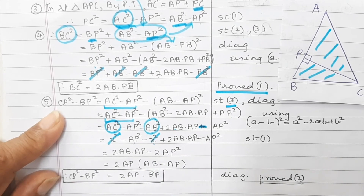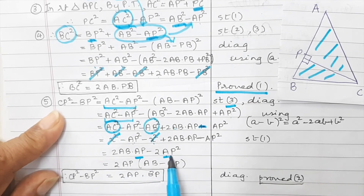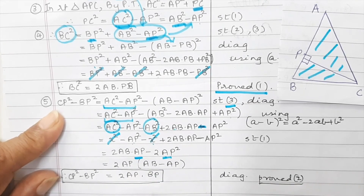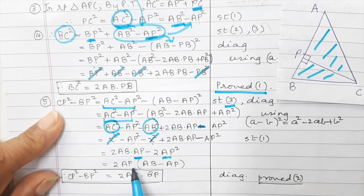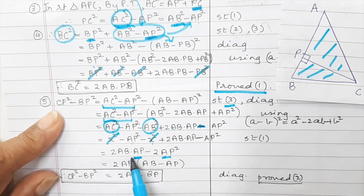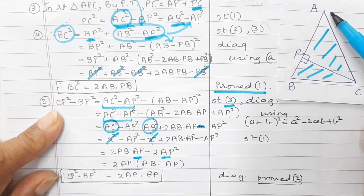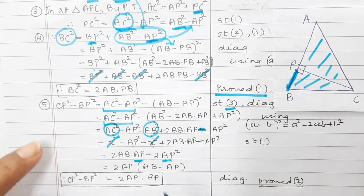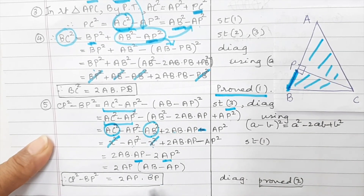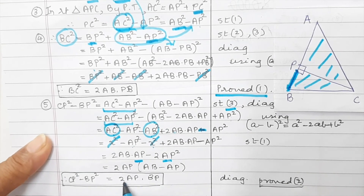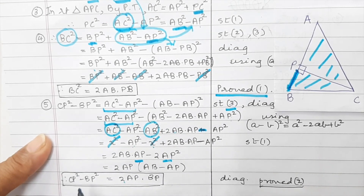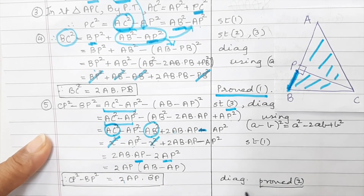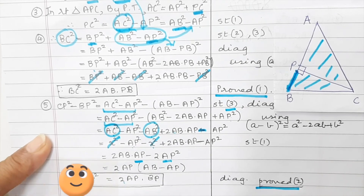So we have 2 AB into AP and minus AP square, with AP square and AP square. AP is common in both these terms, so we take 2 AP as common. Inside the bracket we have AB minus AP. Now from the diagram, AB minus AP is equal to BP. So we have 2 AP into BP, and that is CP square minus BP square — and that is how we prove the second part as well.